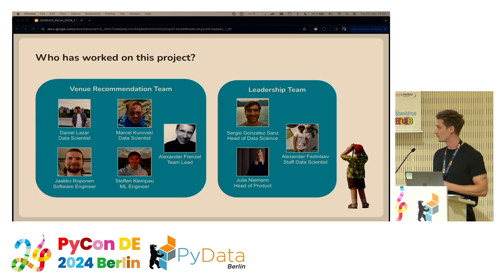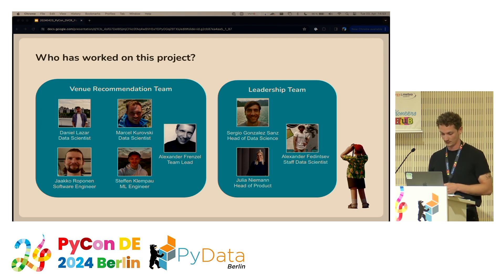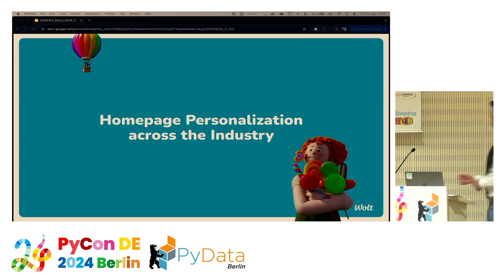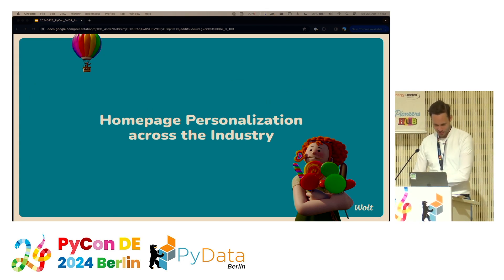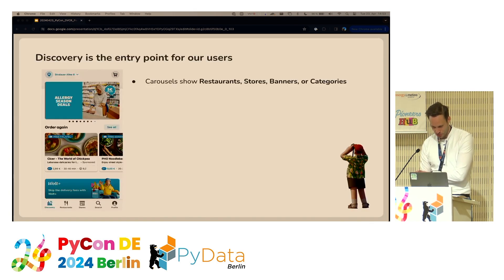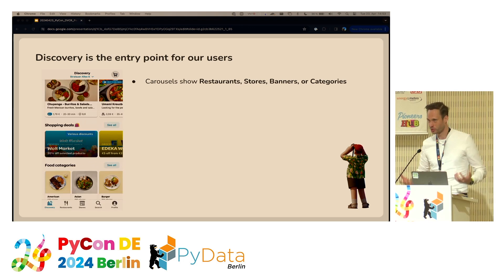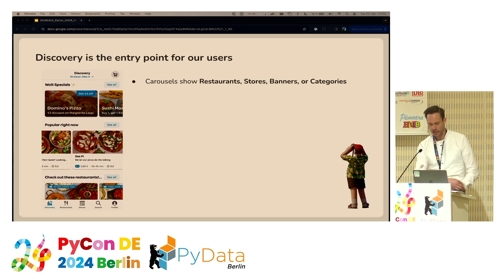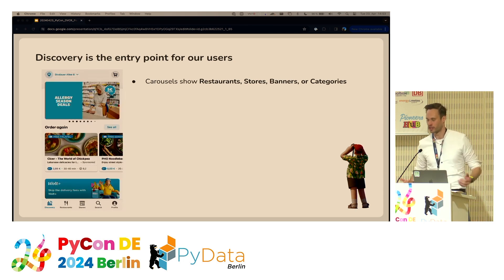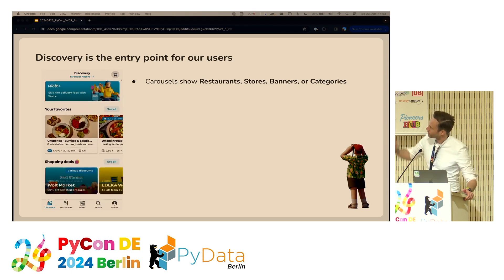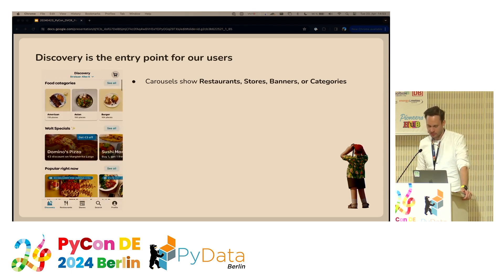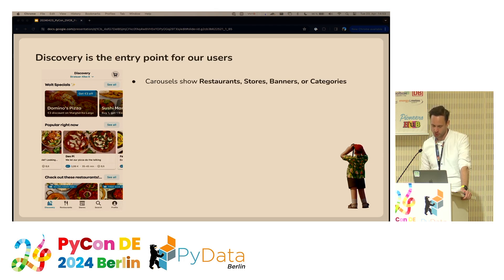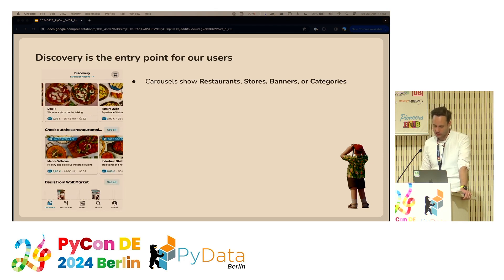One thing to remember: we didn't work on this project alone — we're part of the venue recommendation team and leadership also influenced the vision. With that, let's pull up our sleeves and introduce what our discovery page is actually about. We've discussed personalized ranking of restaurants and stores and relevant items on venue pages. But the discovery page — what you see on the left here — is the main entry point for all our users when they open the app or go to vault.com.